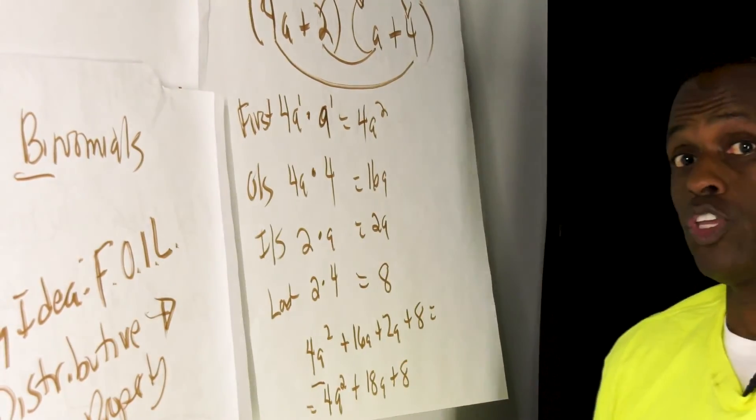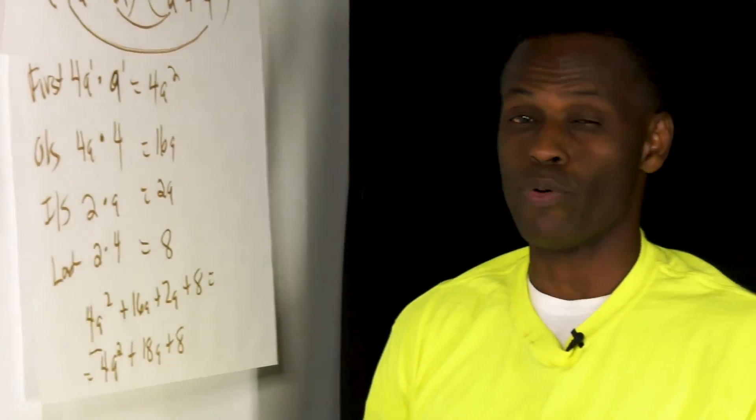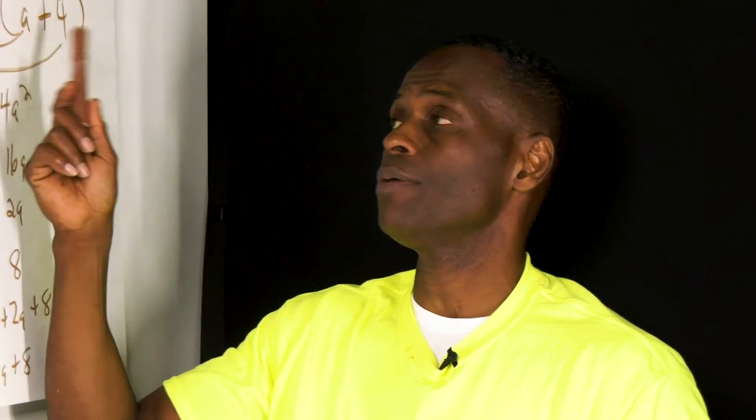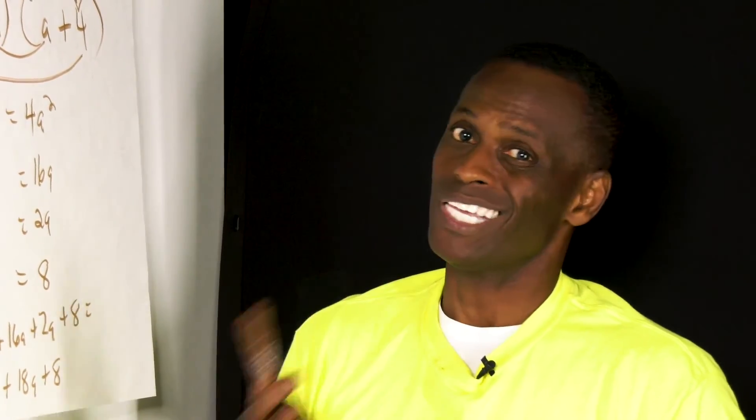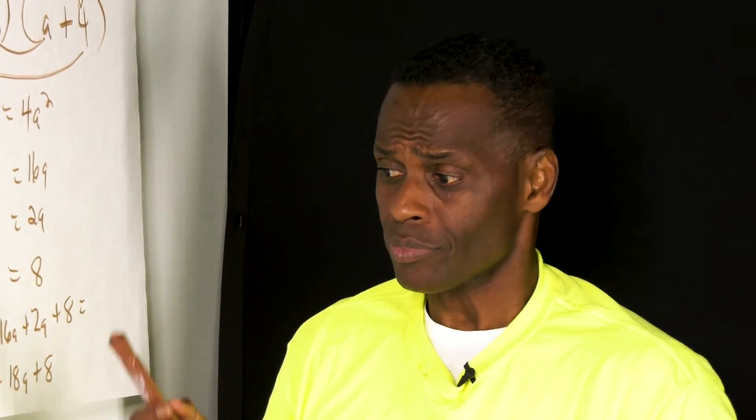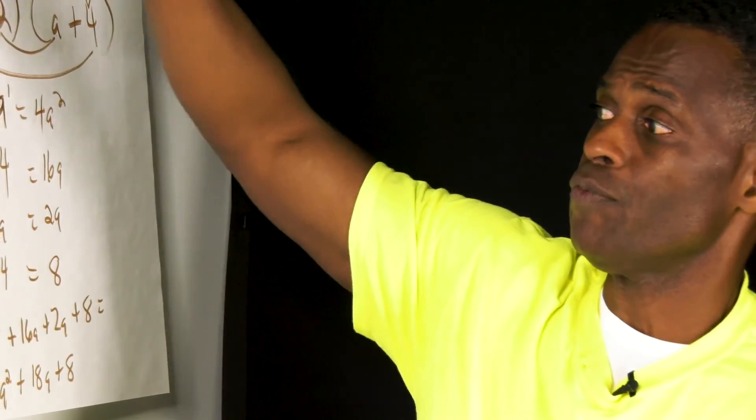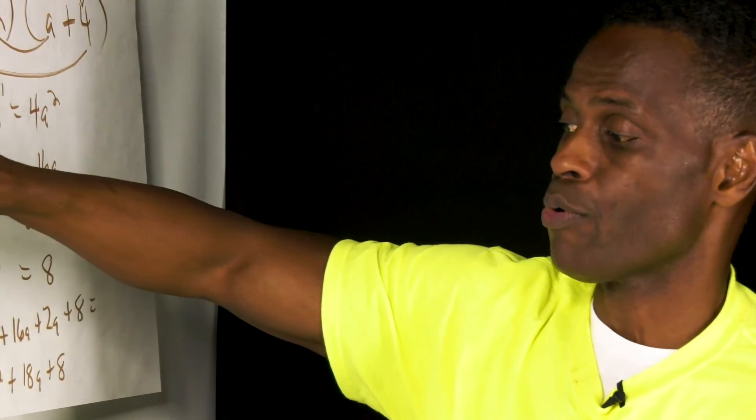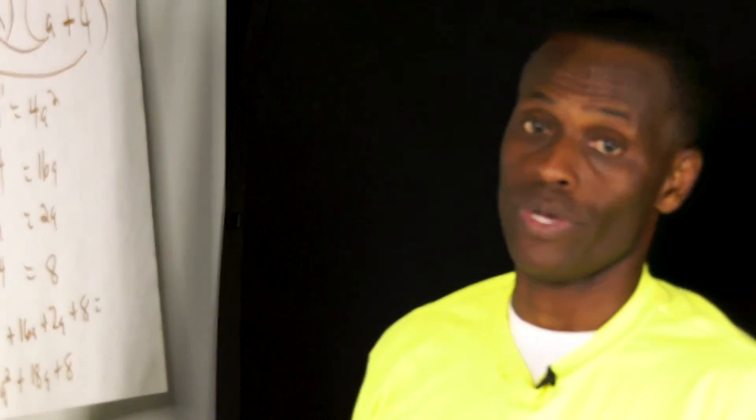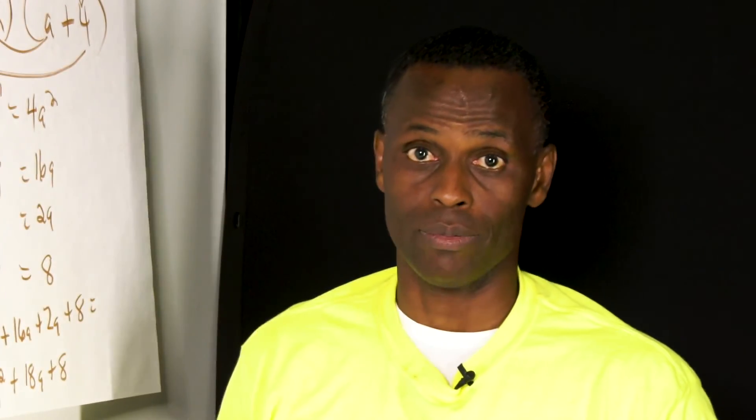So in the last video we used straight distributive property. And the reason why you want to be able to use distributive property is because the FOIL technique is limited to just being able to use on binomials. You can't use it on polynomials and trinomials. So therefore the distributive property works across the board. Works both ways. Works for all of those types of problems.